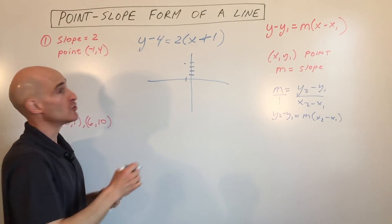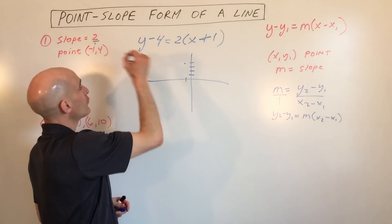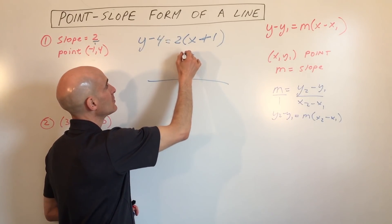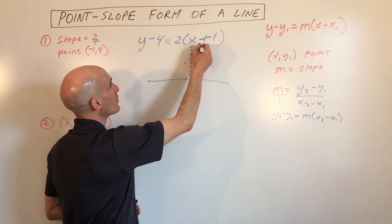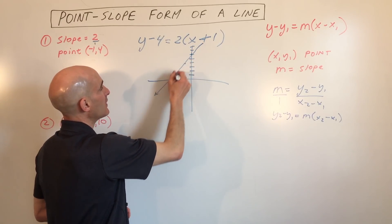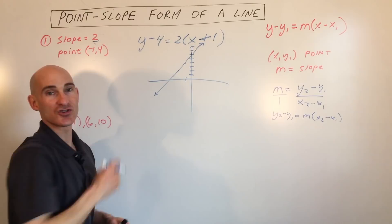And the slope of the line is 2. 2, of course, is like 2 over 1, so the rise is 2, the run is 1. And you can repeat that process: rise 2, run 1. And you can see there's your line.